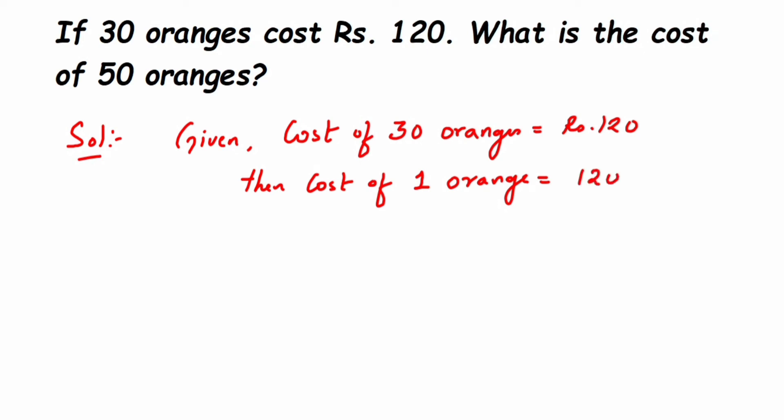divided by 30. So dividing 120 by 30 oranges gives the cost of one orange. We can cancel the zeros, and 12 and 3—in the 3 times table, 3 fours are 12. So we get 4, which means the cost is Rs. 4.